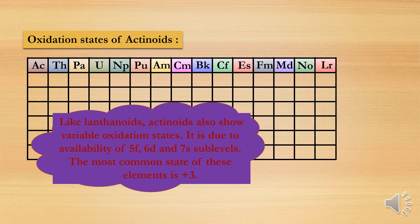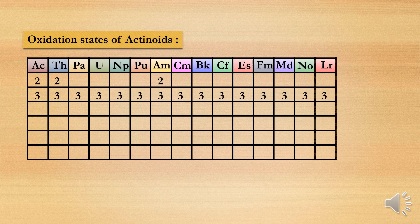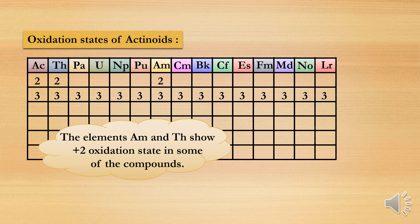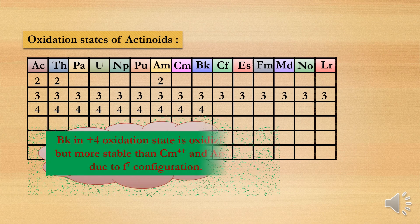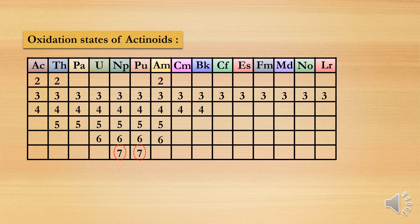The most common oxidation state is +3. In lanthanides, only +2 and +4 are seen other than +3, but in actinides, variable oxidation states (+2 through +7) are possible. Americium and thorium show the +2 oxidation state in some compounds. The exhibition of a large number of oxidation states in actinides is due to the small energy gap between 5f, 6d, and 7s subshells, so those electrons participate in bonding and hence actinides have variable oxidation states ranging from +2 to +7.